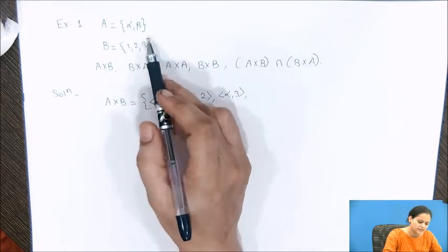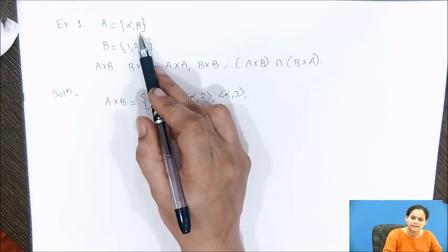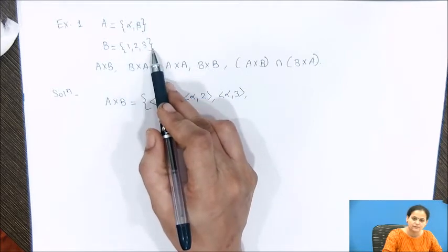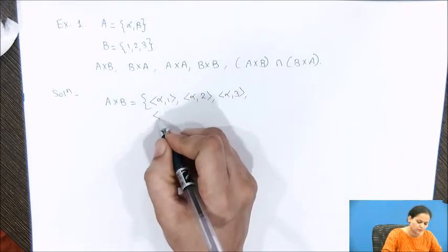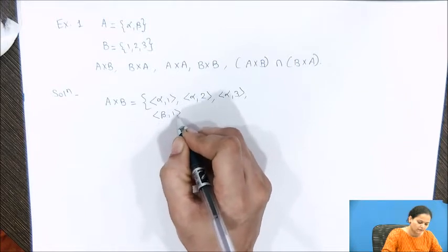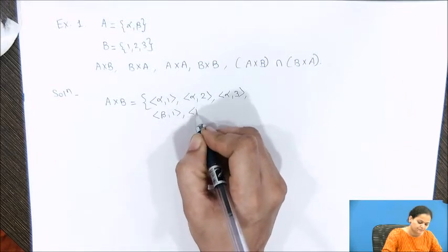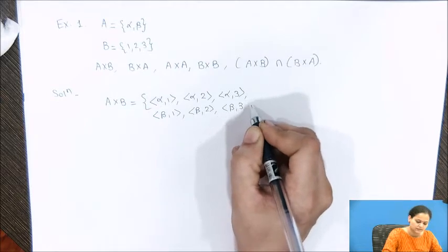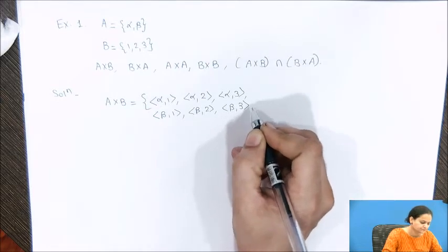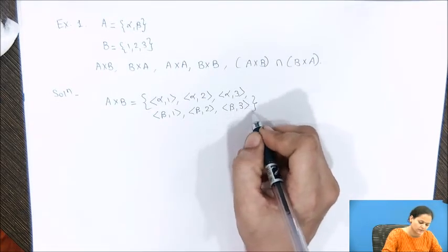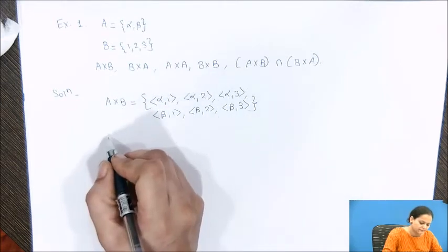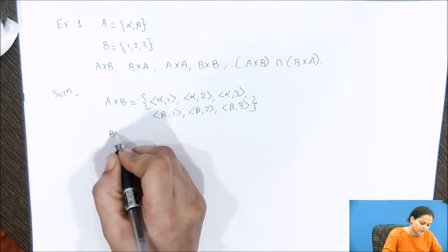Similarly, the second element from set A is β. We combine that with each and every element from set B, resulting in (β,1), (β,2), and (β,3). So this is the answer for the first part, A×B.